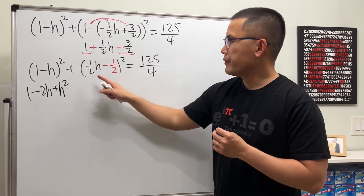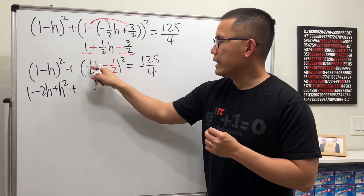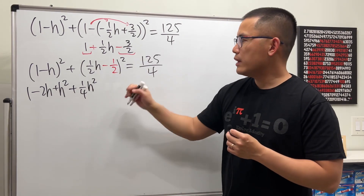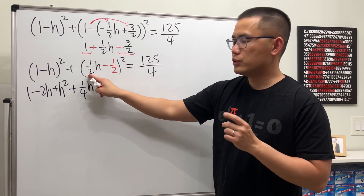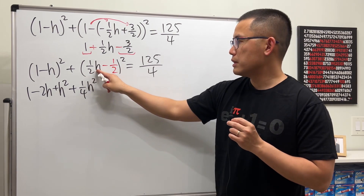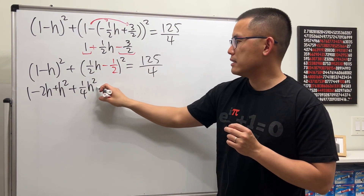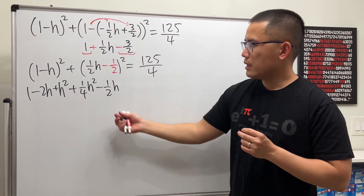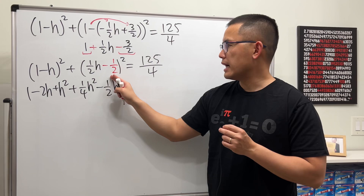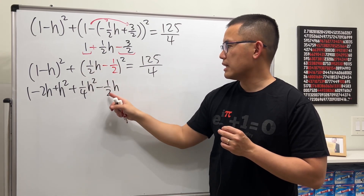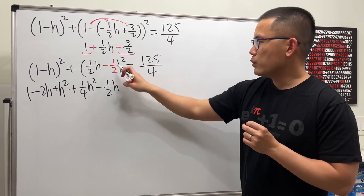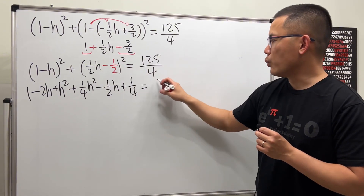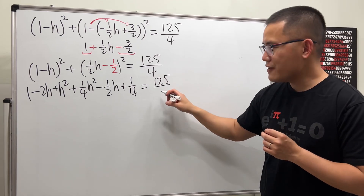Now do the same thing for the second term. One half squared is one over four, times h squared. Then we take two times one half and h, times negative one half — so it's minus one half h. Two times one half cancels, leaving just that part. Then we have plus this term squared, which is one over four. That equals 125 over 4.